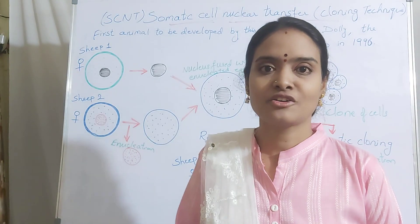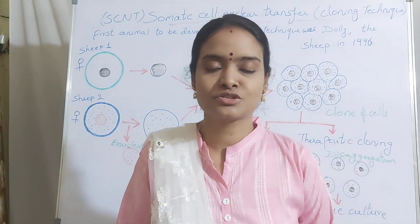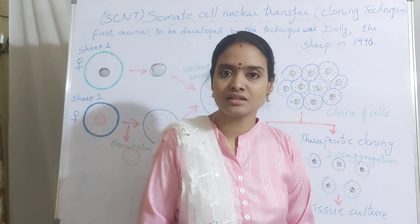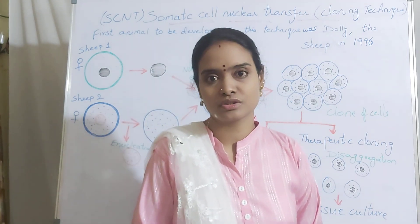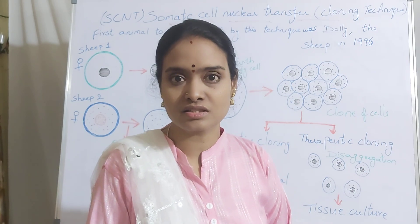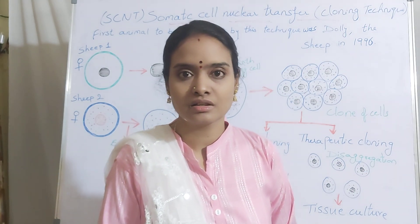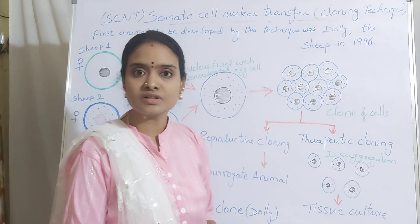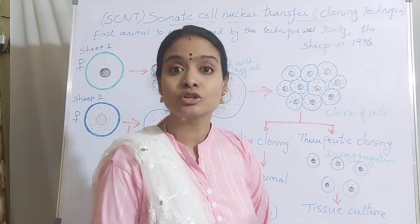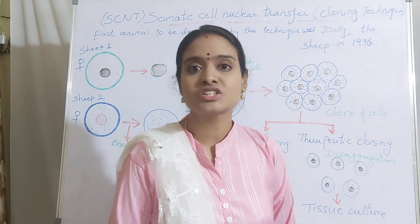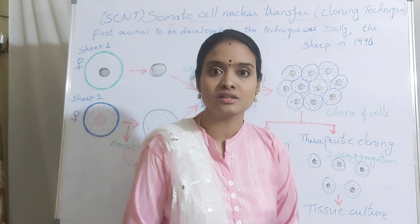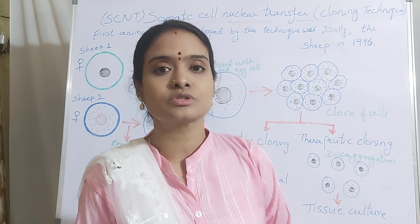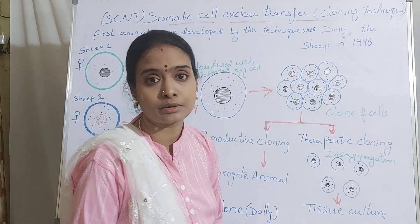Good morning students. Welcome to Leela's tutorial. In today's class we are going to discuss about somatic cell nuclear transfer, which is also referred to as SCNT or cloning technique. By using this cloning technique, the first animal produced was Dolly the sheep, which was produced in 1996. Let us discuss how it was produced and what type of cells were used.